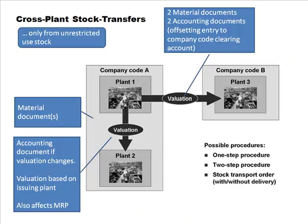Regarding the two accounting documents created in company code to company code transfers — the book says financial accounting documents are only created if the two plants use different valuation. If they're within the same company code, general ledger accounts are rolled up across plants, and you don't bother tracking inventories within FI at the plant level. For financial accounting, all you need is the value regardless of which plant it came from.